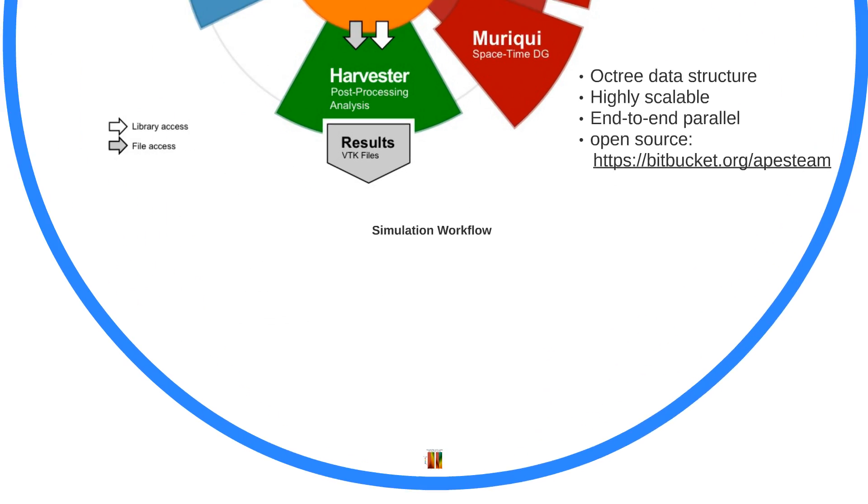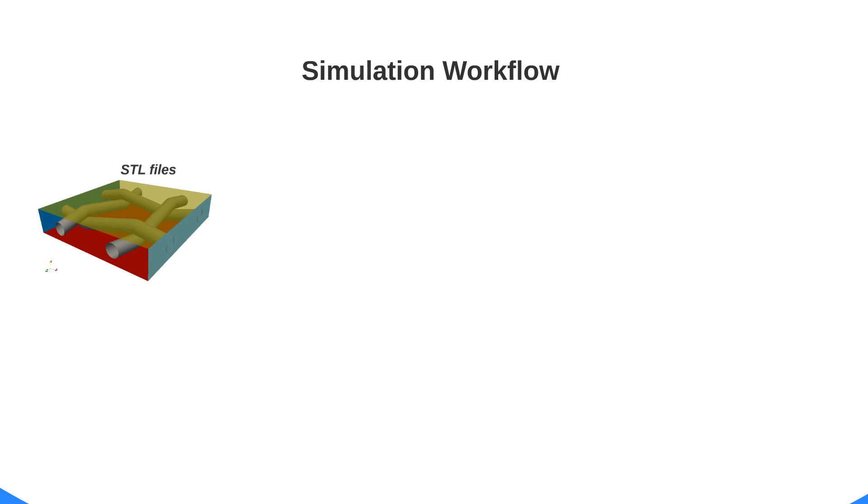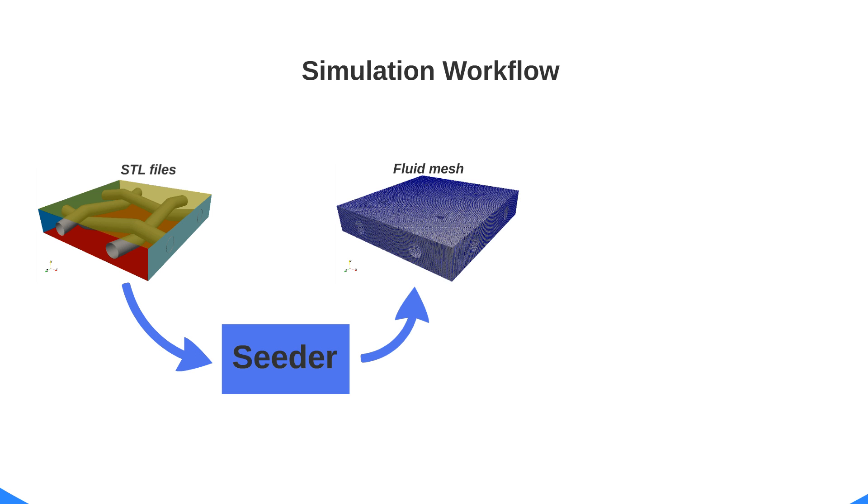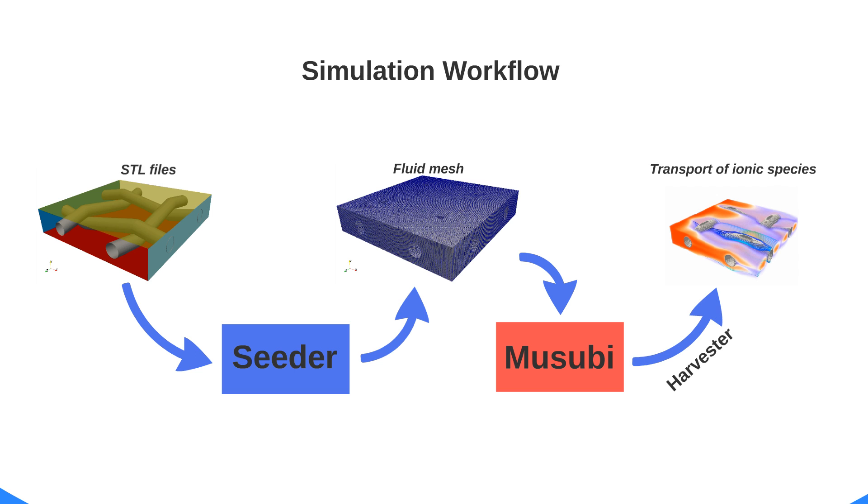Let's see how simulation workflow looks like. The STL files defining boundaries are given as input to mesh-generation tool seeder. It generates the fluid mesh and dumps the data to disk in TreElM format. The fluid mesh is given as an input to solver like Musubi with proper flow parameters, initial and boundary conditions. The solver dumps the simulated data to disk in TreElM format and it is converted to visualization format like VTK with post-processor tool harvester.